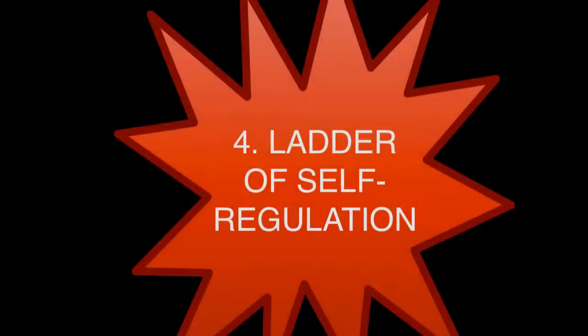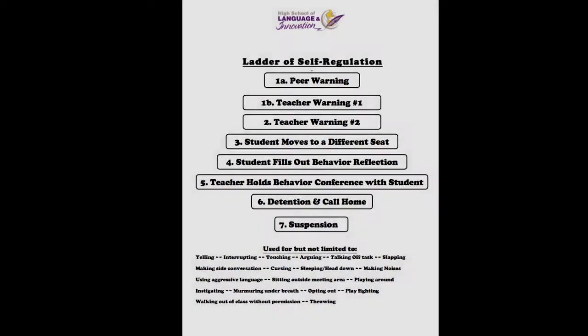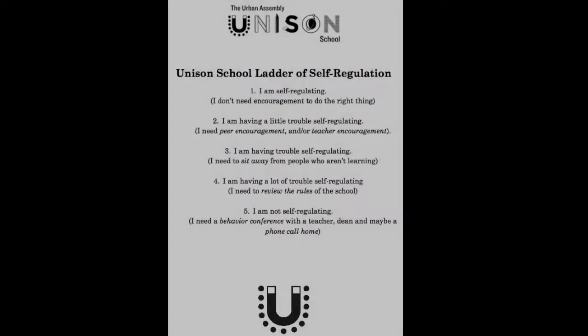Number four: the ladder of self-regulation. An outcome of the social contract talk will be a list of consequences or responses for infractions of the rules. Once suggestions from each class of students have been collected, the school's leadership team should use those insights to develop a ladder of self-regulation to be posted in every classroom. Usually the ladder starts with a peer reminder, moves to a teacher reminder, moving seats, and so on. Because social norms are an integral facet of the curriculum and need to be taught explicitly and internalized, the ladder is an educational tool — use and refer to it whenever a student is breaking a rule and needs support in re-regulating their behavior, rather than as a punitive tool.